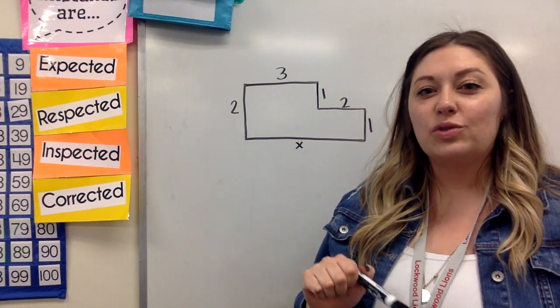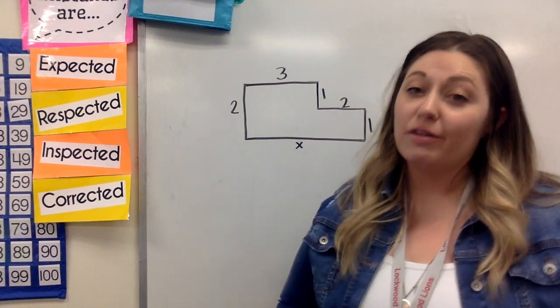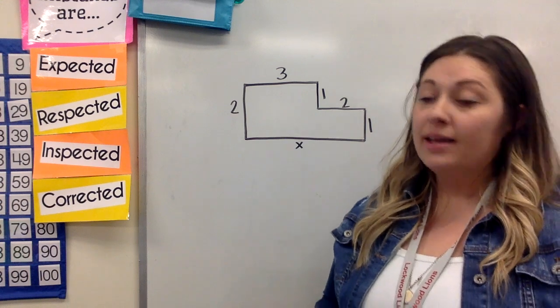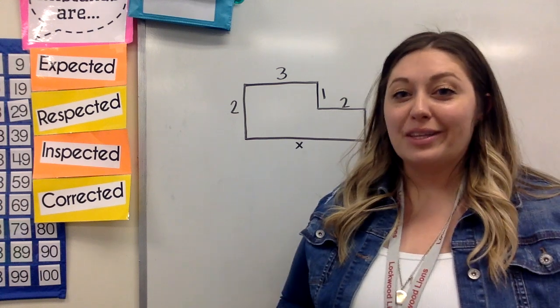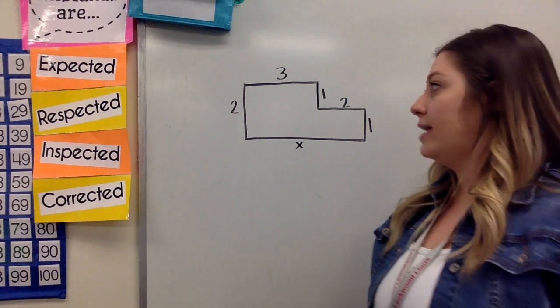Hey guys, so we are going to look at finding perimeter when one of our side lengths is missing. This kind of requires you to be a little bit of a detective and fill in some blanks.